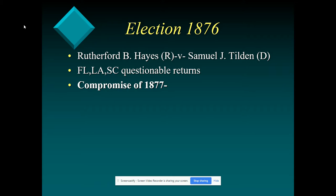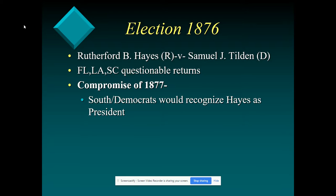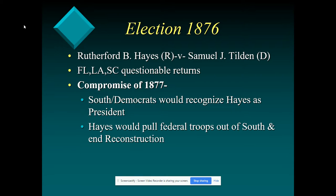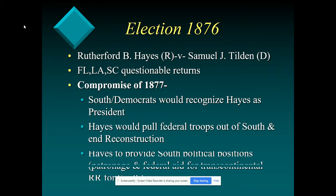Hayes defeats Samuel Tilden, a Democrat, so we have this Compromise of 1877. Hayes would be recognized as president, and he is going to remove the troops, ending Reconstruction. This is going to cause a lot of problems for African Americans, who were able to vote with little restrictions at all because federal troops were providing protection. Now they're going to have lots of barriers to voting, and nothing's going to change in the South really until the 1950s and 60s.